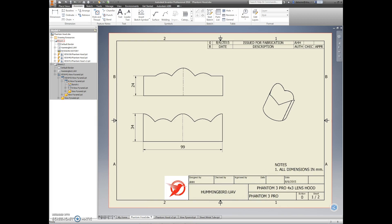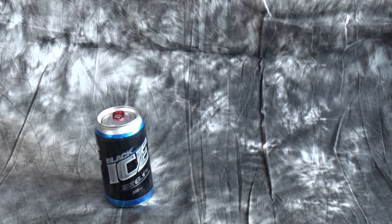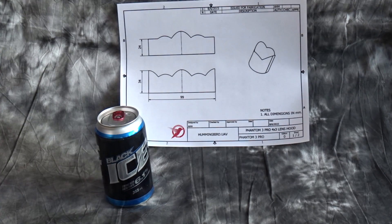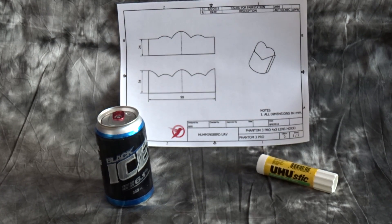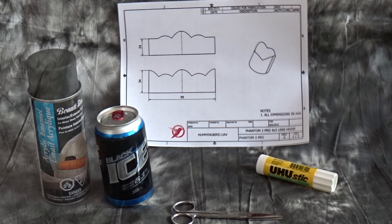Next we need our supplies. Start with a beer can, the drawing, a glue stick, a pair of scissors, some black flat paint.